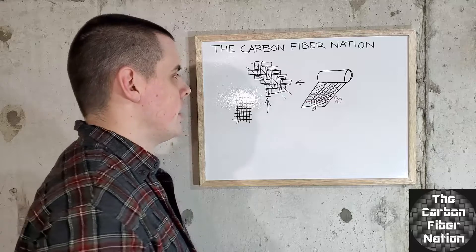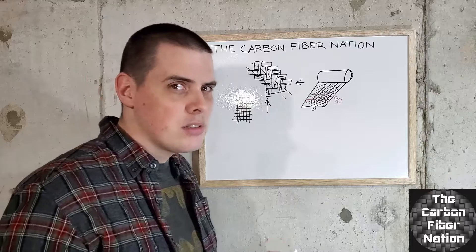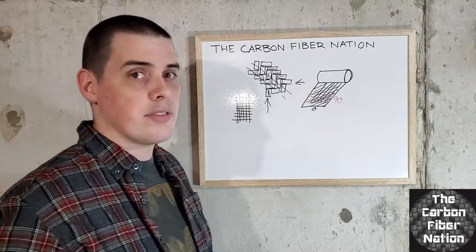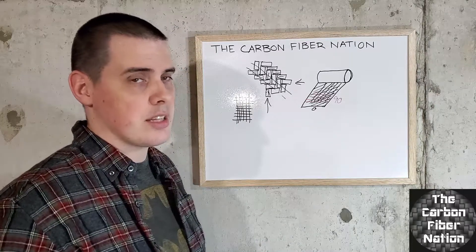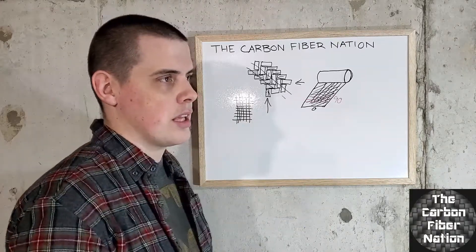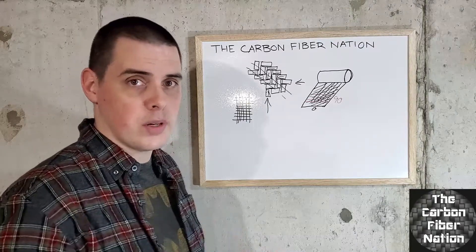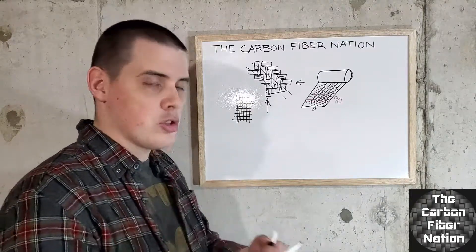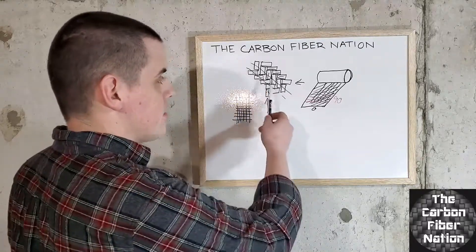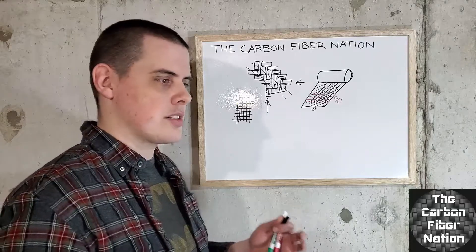The Koenigsegg Agera naked carbon I believe is what they call it has a four by four twill. The Ford GT liquid carbon is a two by two twill. When you zoom in what you'll end up seeing is the fibers and then the pattern, and everything on those cars tries to have the pattern flow together because it looks really nice that way.